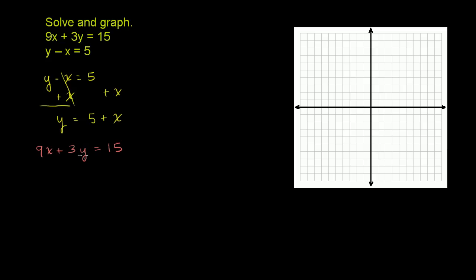So let's do that. We're going to replace y with 5 plus x. So this 9x plus 3y equals 15 becomes 9x plus 3 times y. The second equation says y is 5 plus x. So we're going to put 5 plus x there instead of a y. 3 times 5 plus x is equal to 15.